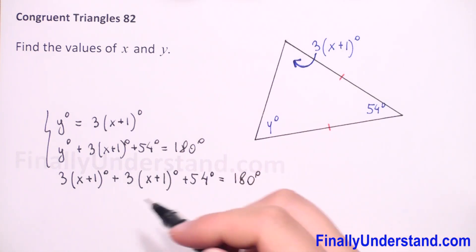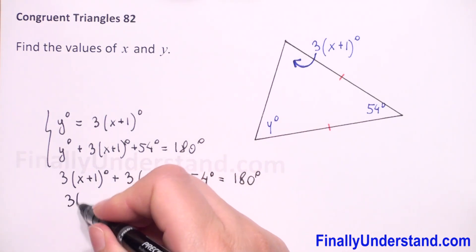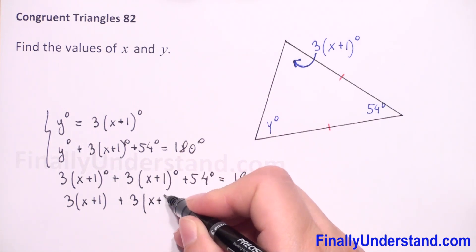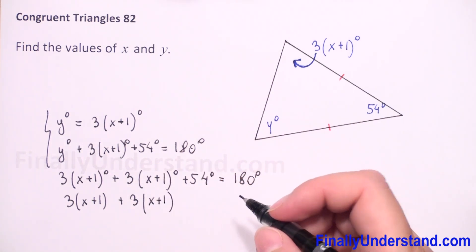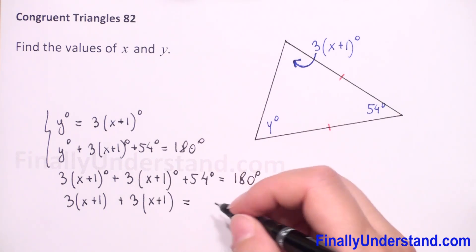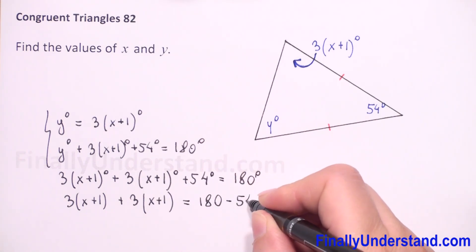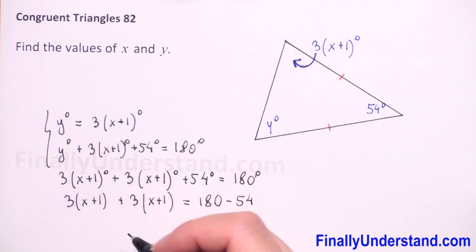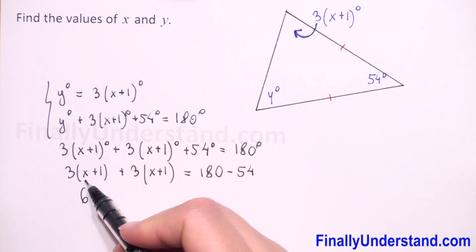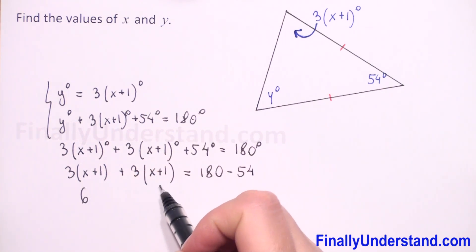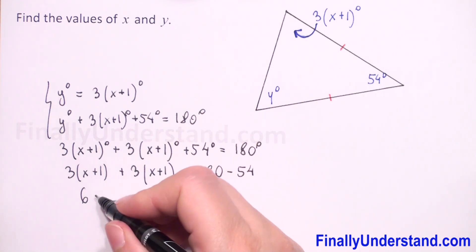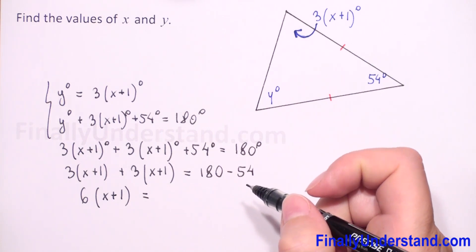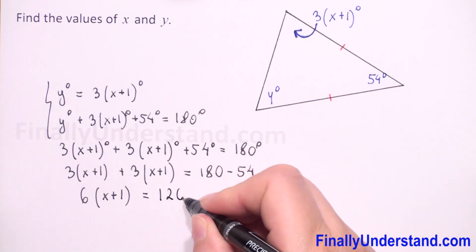Now let's work without degree symbols. We have three times x plus one plus three times x plus one, and I will move 54 to the right side, so this equals 180 minus 54. Since we have the same expression in parentheses, we can add three and three to get six times x plus one. This equals 126.